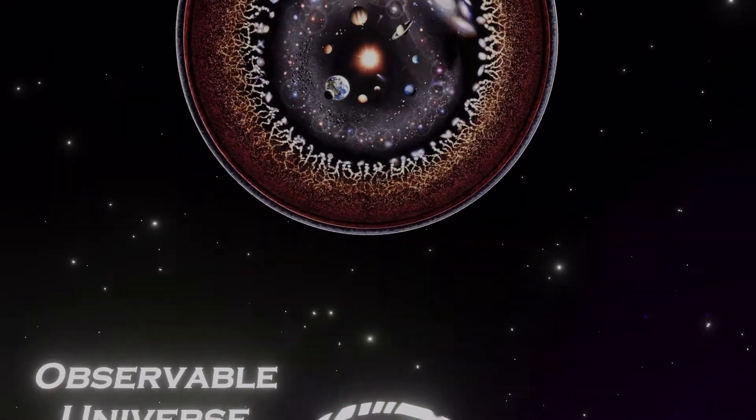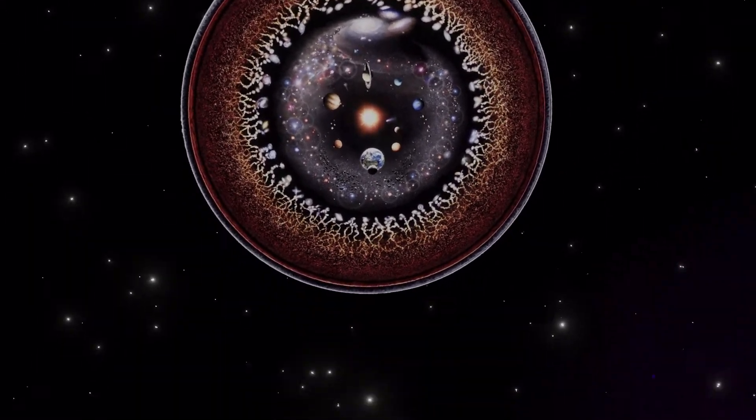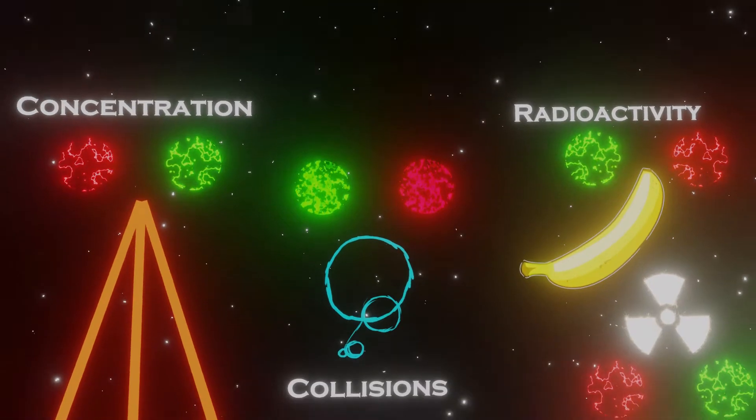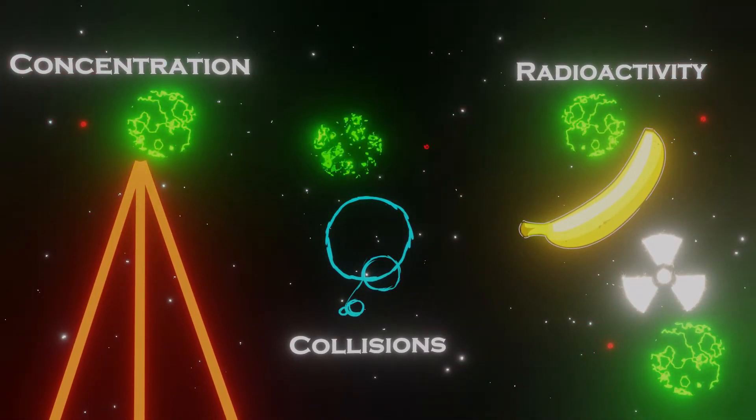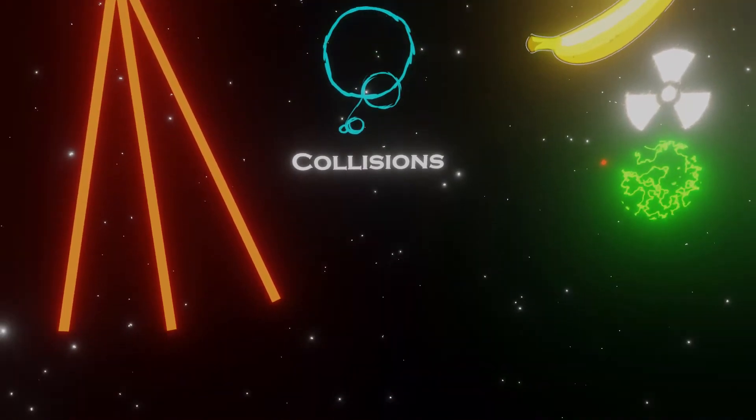This raises a huge problem in our current understanding of physics, as something must have allowed for matter to exist in quantities greater than antimatter. This discrepancy is what is known as baryon asymmetry.